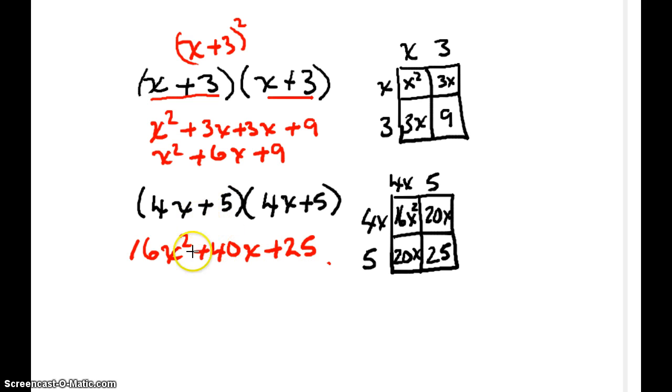And so what I'd like to show you tonight is how we can take a look at a polynomial like this or a polynomial like this and identify very quickly whether or not it's a perfect square, whether or not it's the same binomial times itself. So how do I do that? Well, this x is really x times x, right? And this 9 is really 3 times 3.